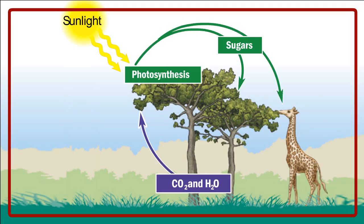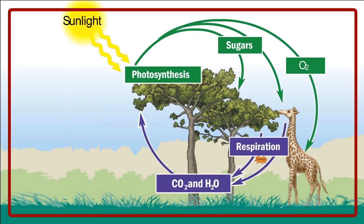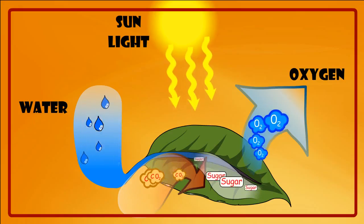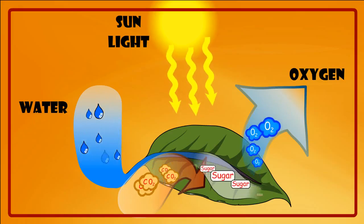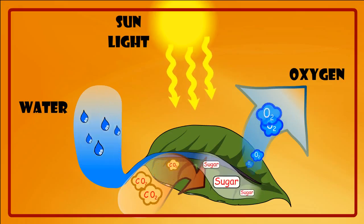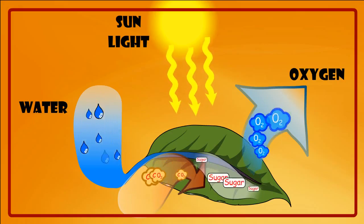Photo means light and synthesis means putting together. During photosynthesis, plants get water from the soil and carbon dioxide from the air. The process of photosynthesis takes place in the leaves.